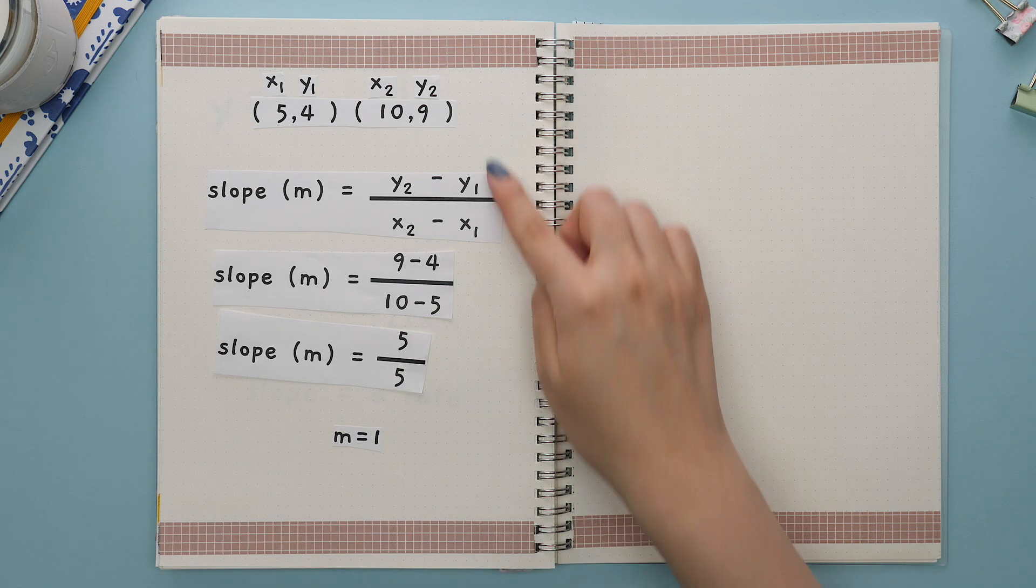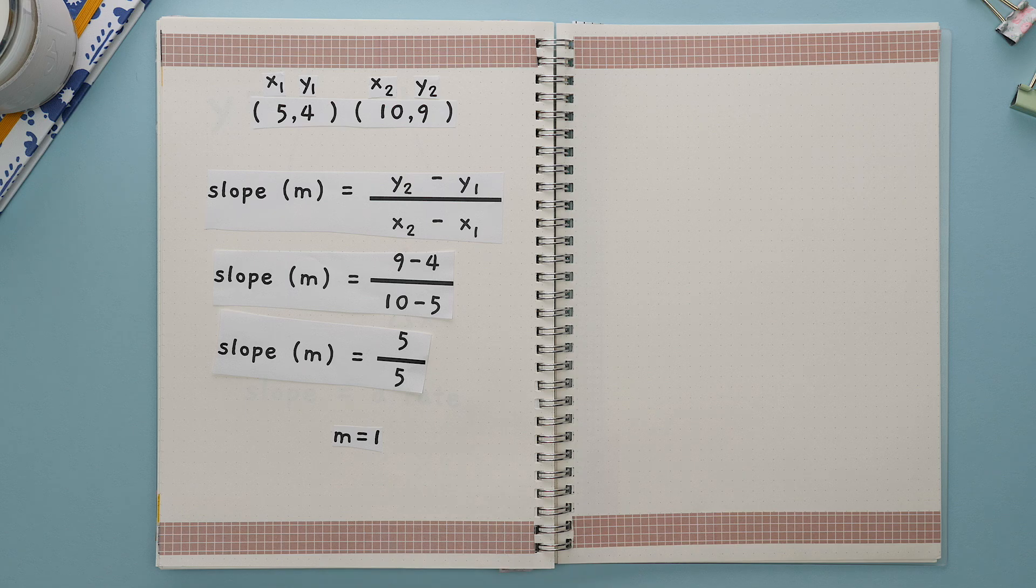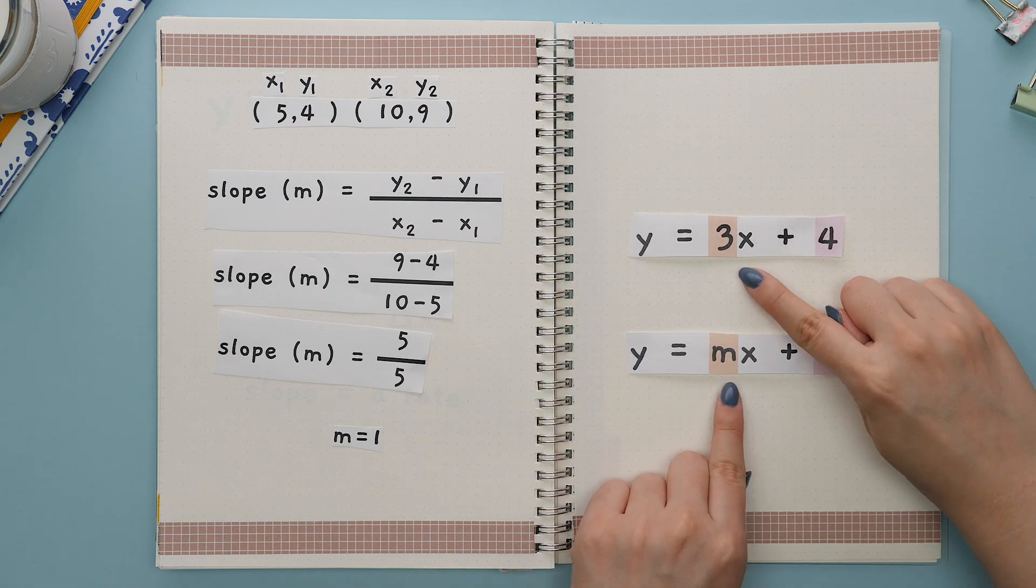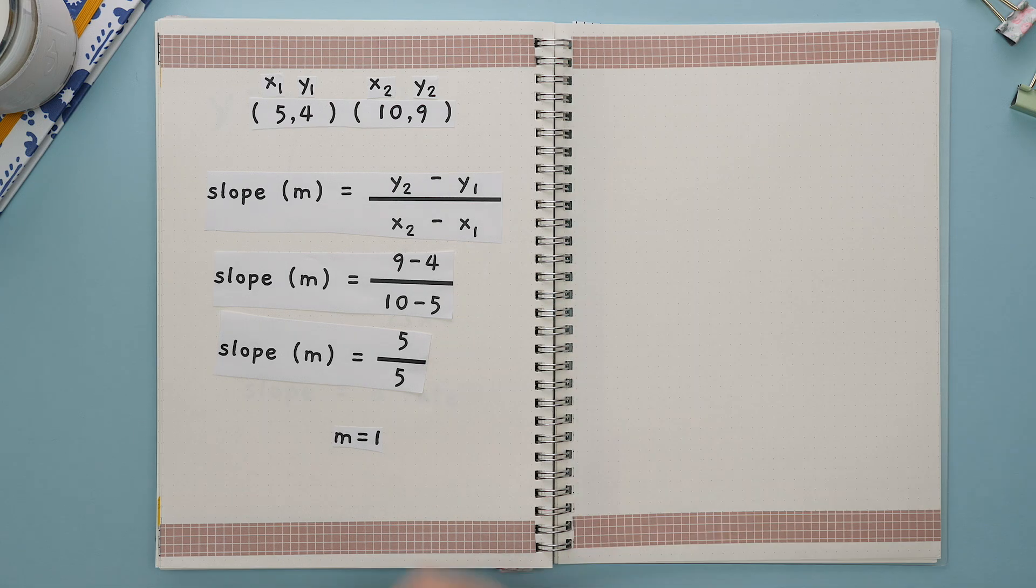Typically in chemistry, you won't be asked to find the slope by hand. You would just use the coefficient in front of the x in your trend line. Note,